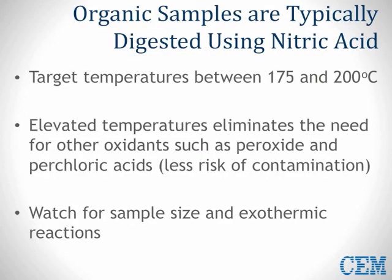Organic-based samples — those which contain carbon, hydrogen, oxygen, and nitrogen — are typically digested in nitric acid alone at temperatures between 175 and 200 degrees Celsius. Since nitric acid is heated well above the boiling point, you can eliminate other oxidizing acids such as perchloric or hydrogen peroxide. The main concern is an exothermic reaction which generates a lot of gas quickly, and sample size along with the right method will help with this.